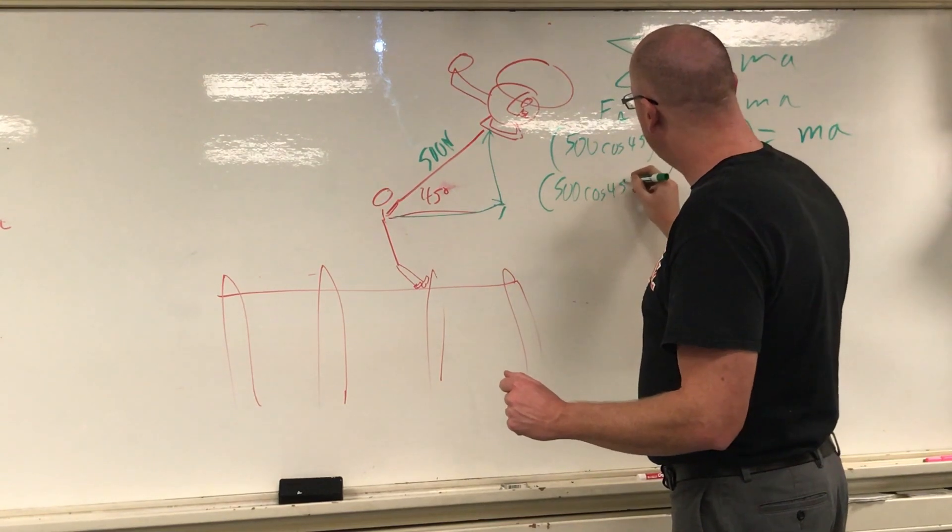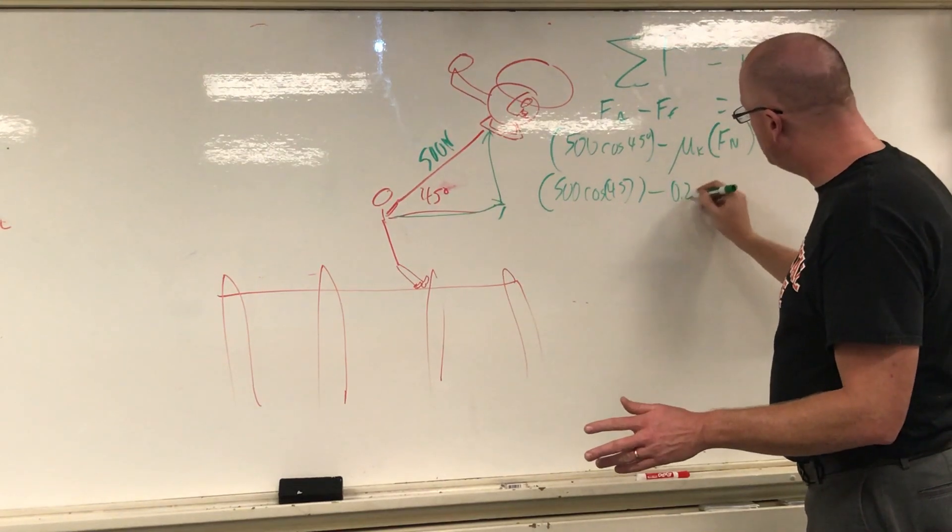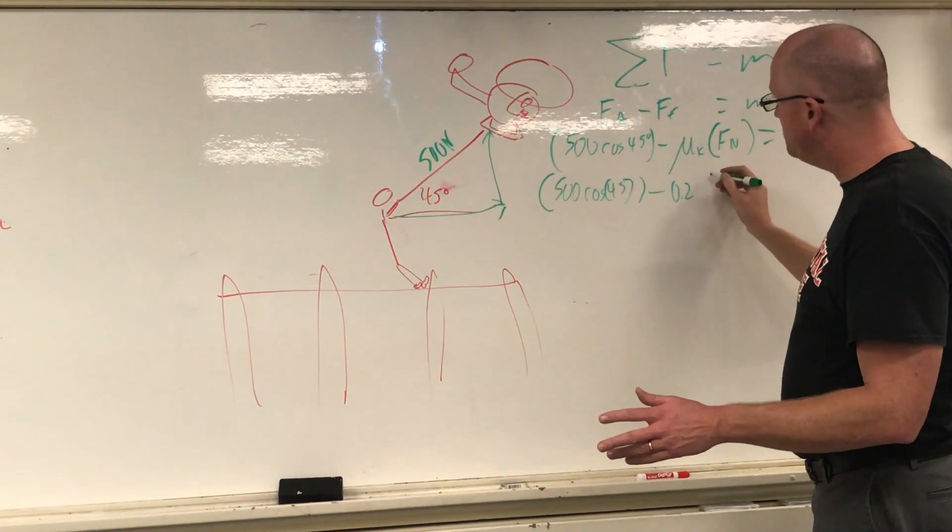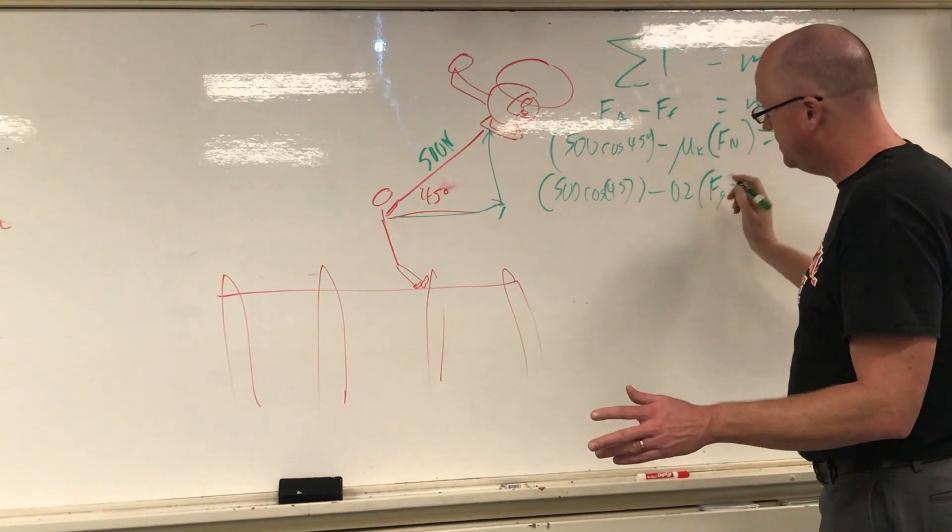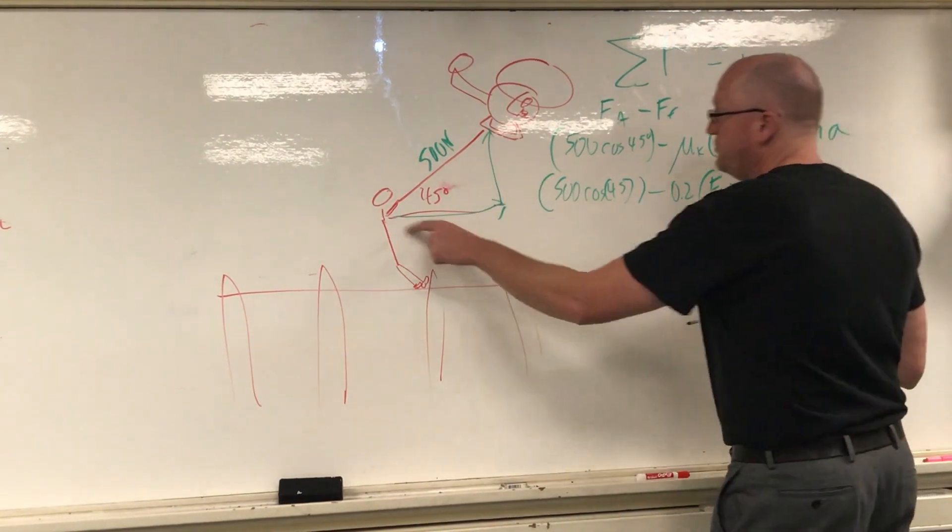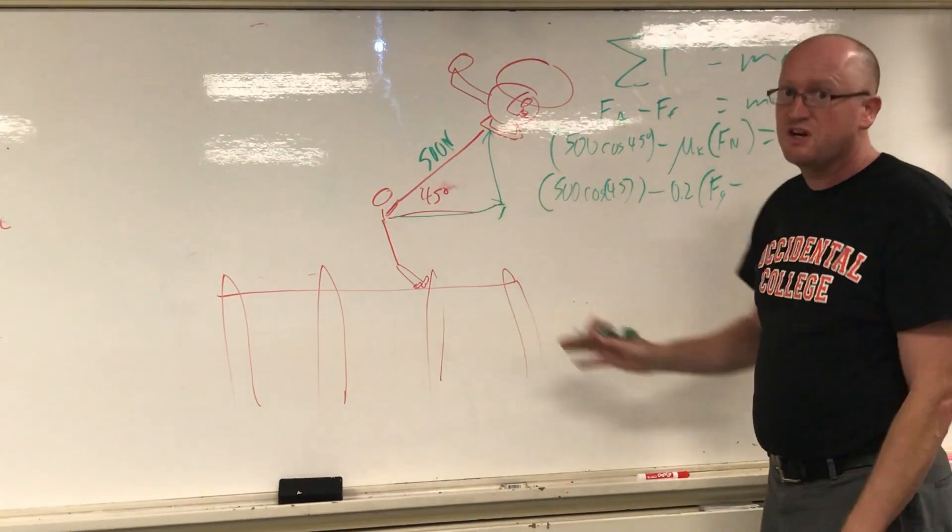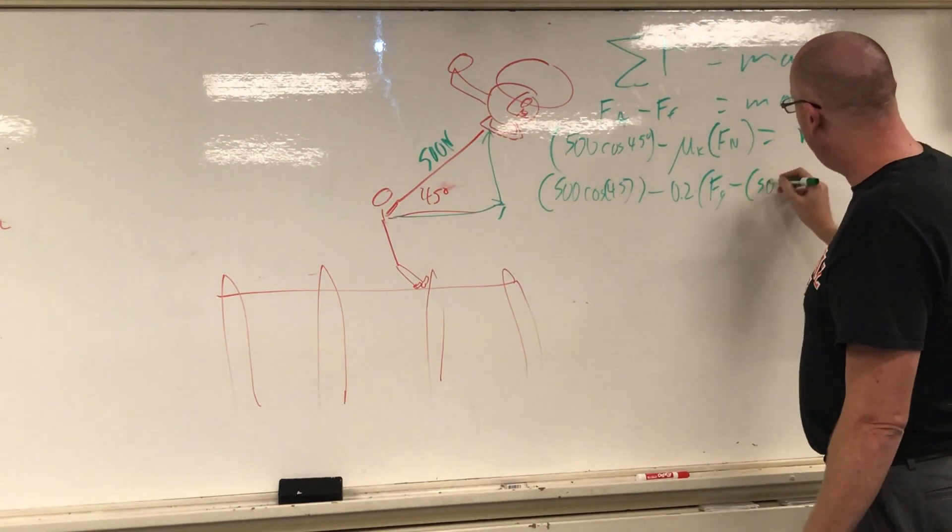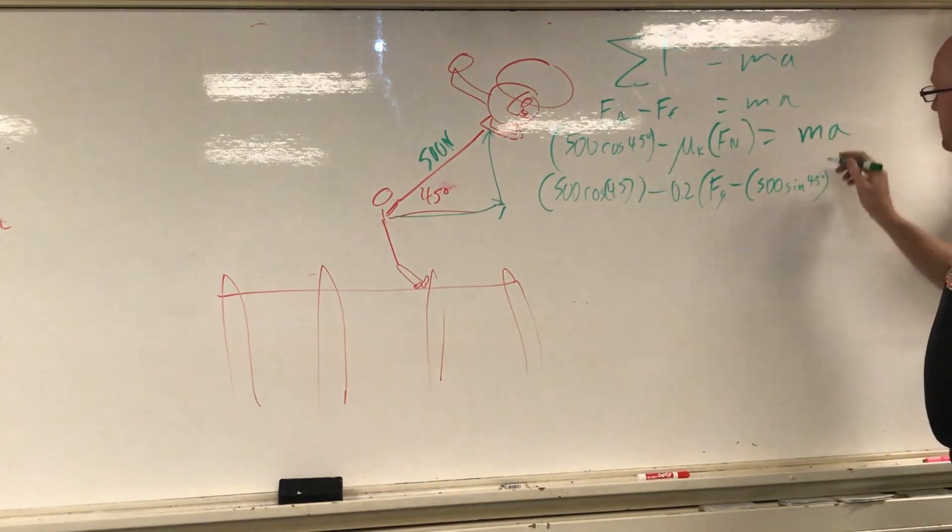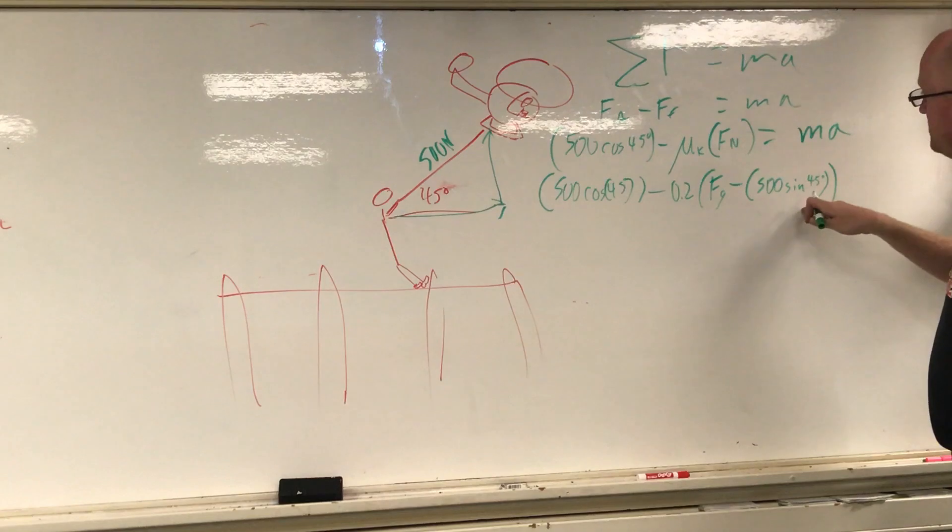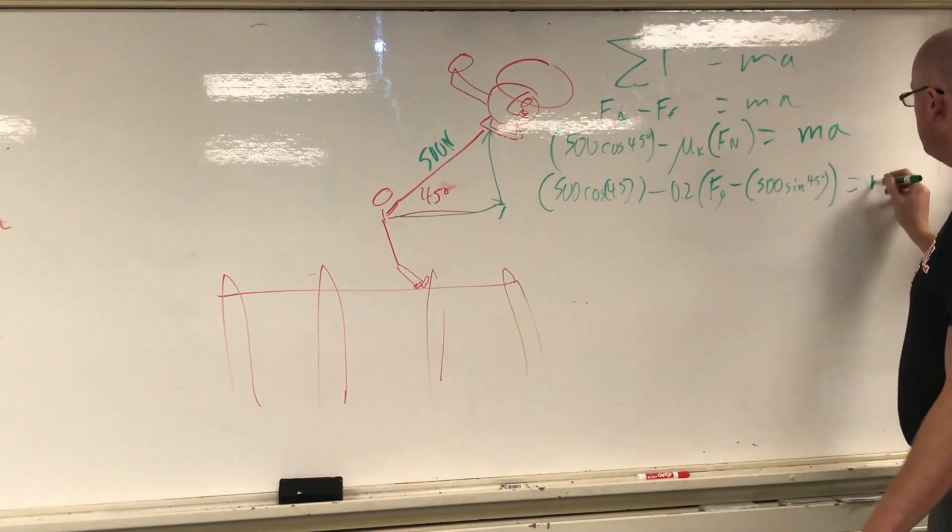Equals m times a. So going along here, 500 cosine 45 degrees minus coefficient of friction 0.2 times the normal force, which is going to be the force of gravity minus the amount you're being pulled up with. This was cosine of 45 degrees, so that's got to be sine. And it's also the opposite, there's another reason it's got to be sine. So 500 sine 45 degrees. So your force of gravity minus that.